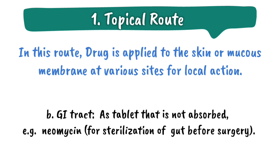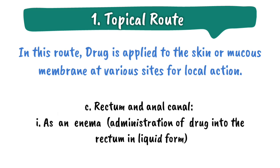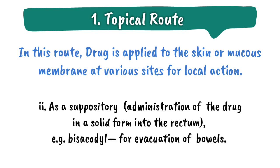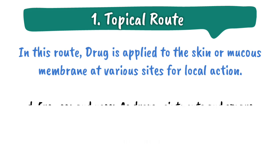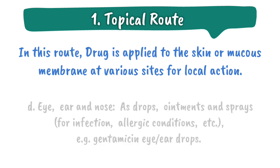Through the GI tract, as a tablet that is not absorbed, for example neomycin for sterilization of the gut before surgery. Through the rectum and anal canal, as an enema — administration of drug into the rectum in liquid form — and as a suppository — administration of the drug in solid form into the rectum. To the eye, ear, and nose as drops, ointments, and sprays for infection, allergic conditions, etc. For example, gentamicin eye and ear drops.